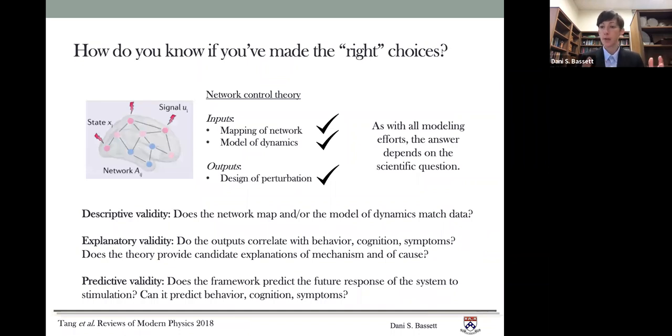So with all of those outputs, we've talked about the inputs, we've talked about the outputs. Now I want to ask the harder question, how do you know if you've made the right choices? So as with all modeling efforts, the answer is going to depend on the scientific question. I think that there are at least three different ways that we can think about the validity of the choices that we would make for the inputs and for the outputs.